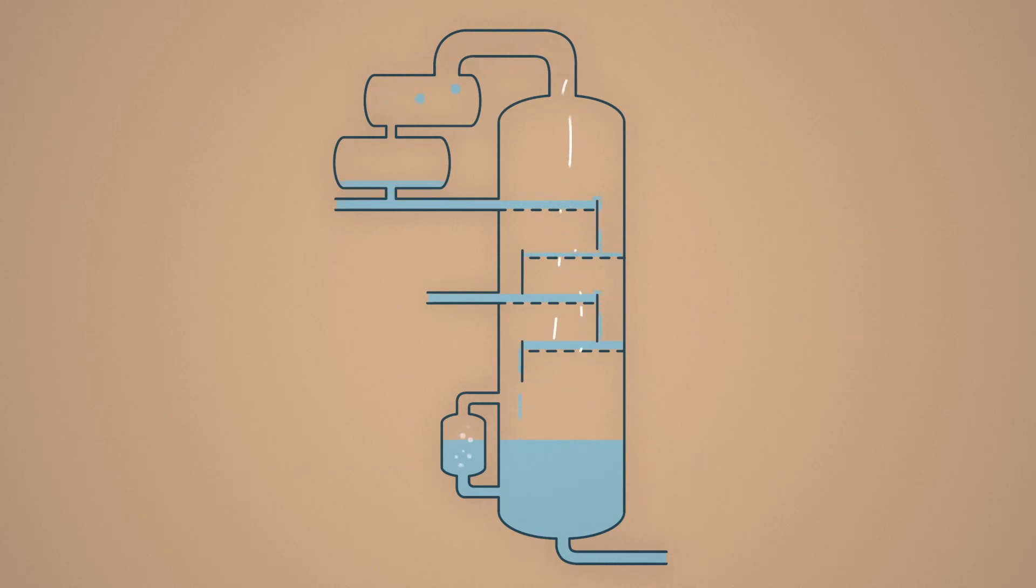As a result, a product with a low boiling component comes out of the top section, and a vat residue consisting of high boiling component comes out of the bottom.